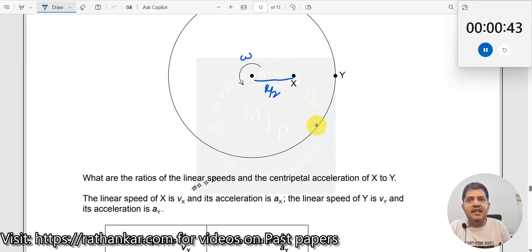What are the ratios of linear speeds and centripetal acceleration of X to Y? The linear speed at X is Vx, and the linear speed at Y is Vy.